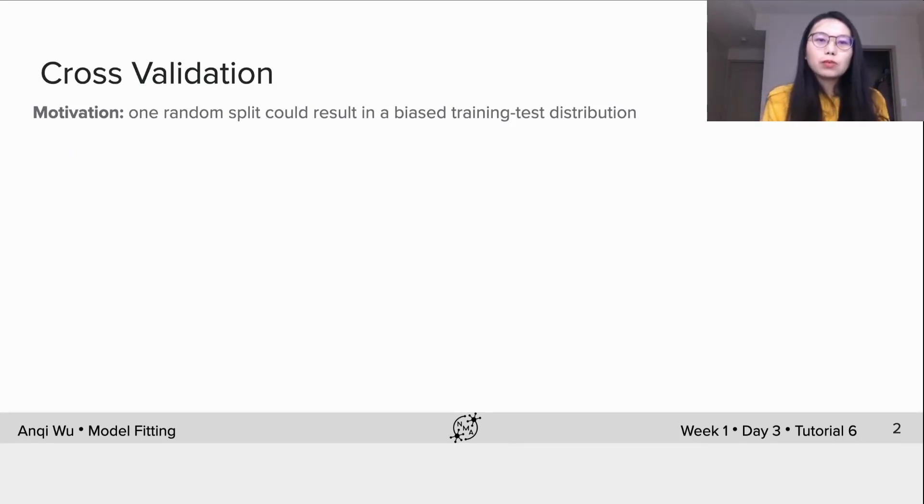In a previous video, we showed that when there's flexibility in choosing the model complexity, for example the polynomial order in polynomial regression, a bad choice of the order would lead to either underfitting or overfitting.